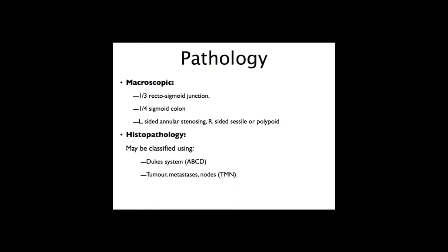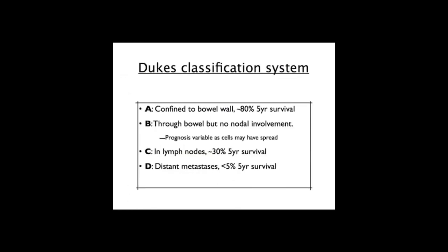Histopathology staging can be done in two ways: the Dukes system using A through D, which is simpler, or the TNM system, which is more complex. Dukes A is confined to the bowel wall with about 80% five-year survival. Dukes B means the tumour has gone through the bowel wall but with no nodal involvement, and prognosis is variable. Dukes C involves lymph node spread with about 30% five-year survival, and Dukes D has distant metastases with less than 5% survival. These grades are important for determining therapy.